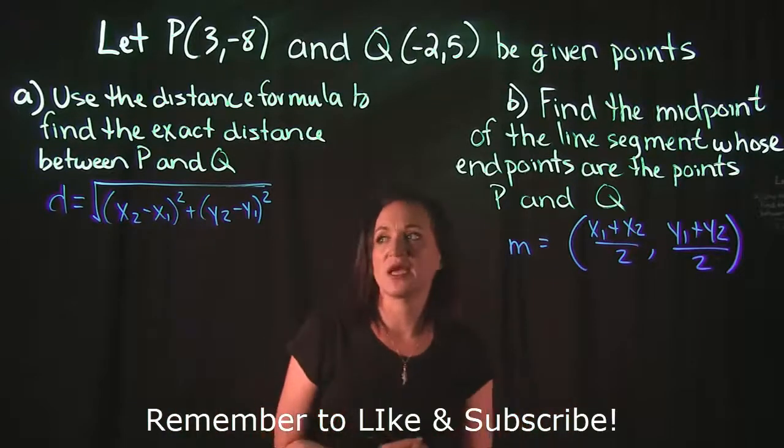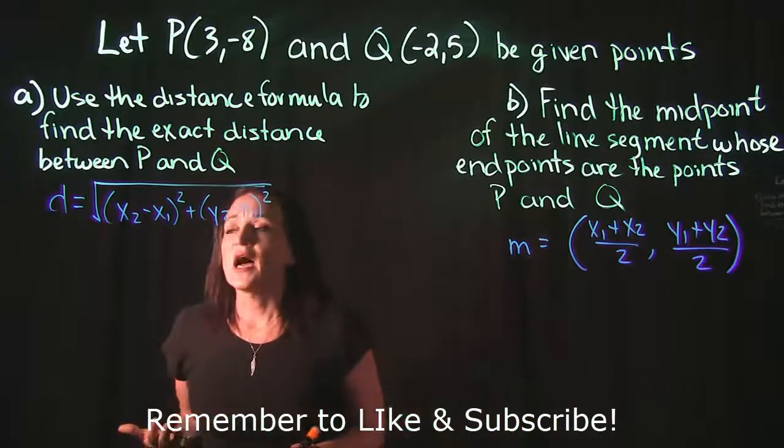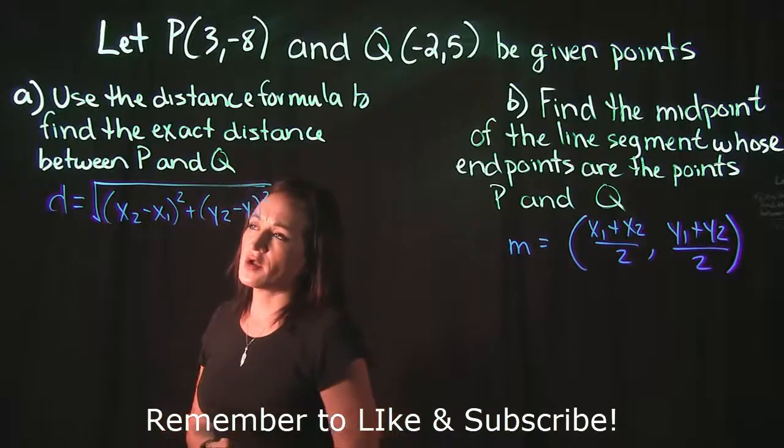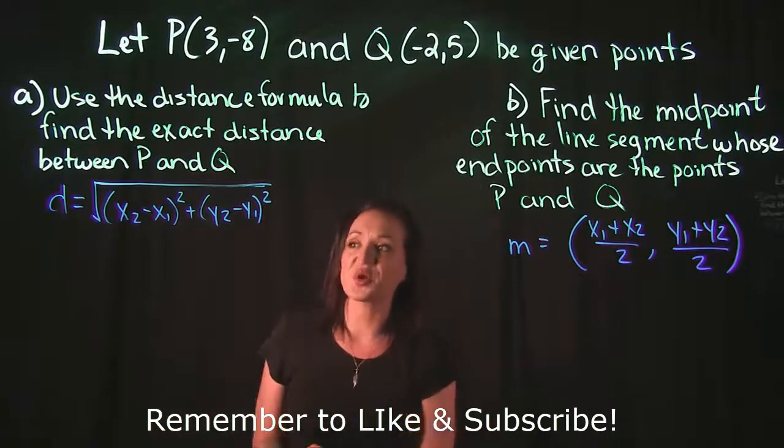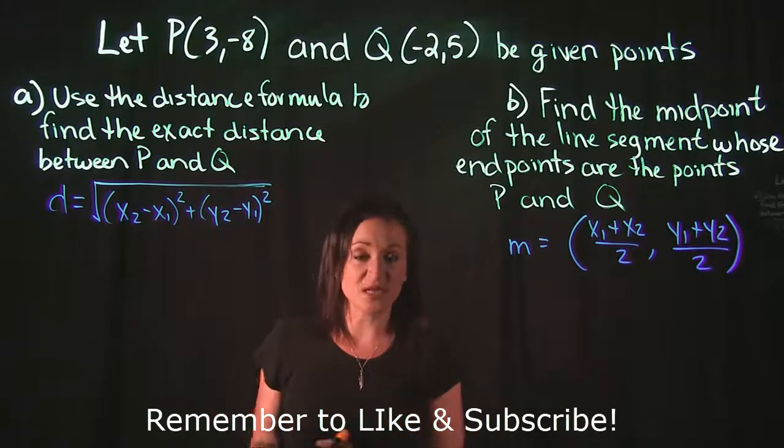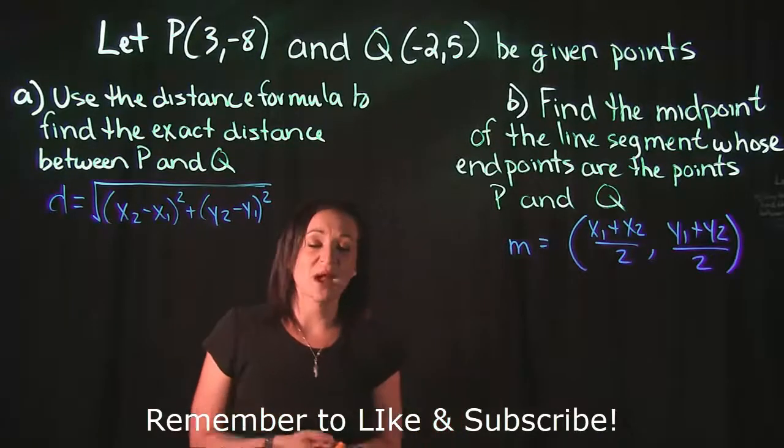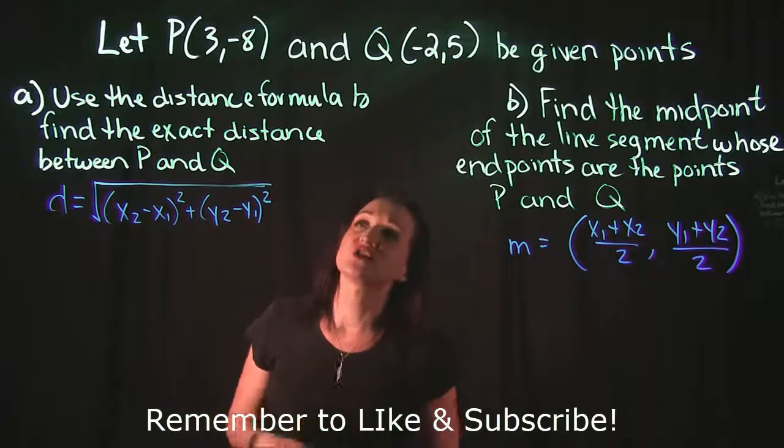For the distance formula, we have distance equals the square root of (x2 - x1)² plus (y2 - y1)². So the first thing I'm going to do here is label the points that we have.